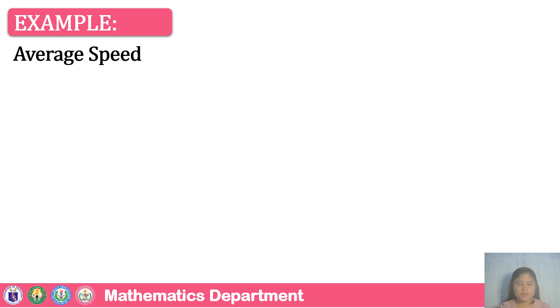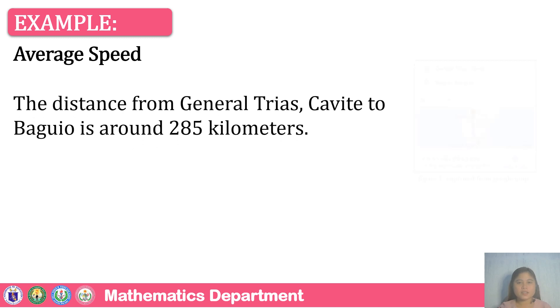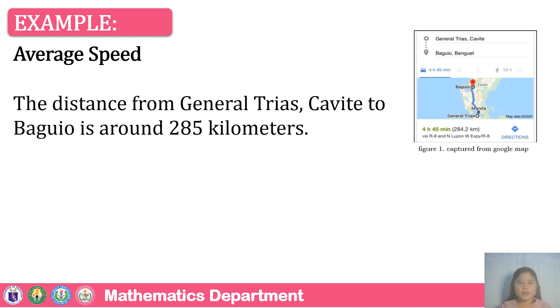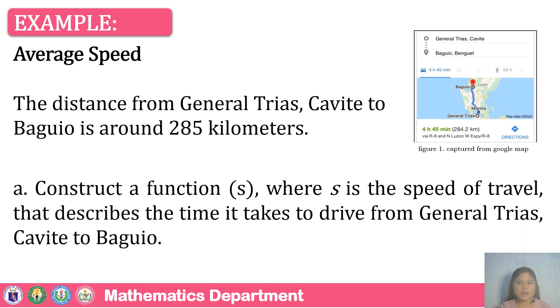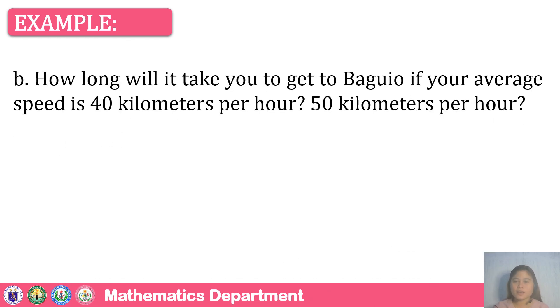Now that you know which functions can be considered rational functions, let us proceed to the representation of rational functions in real-life situations. One example is average speed. The distance from General Trias Cavite to Baguio is around 285 kilometers. Construct a function S, where S is the speed of travel, that describes the time it takes to drive from General Trias Cavite to Baguio. How long will it take to get to Baguio if your average speed is 40 kilometers per hour?